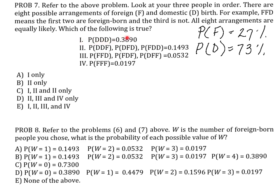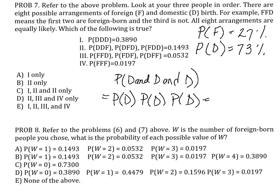And so for this one, what would we do? These are all domestic-born, so we would have to compute the probability of D and D and D, which is just the probability of D times the probability of D times the probability of D. So that's going to be 0.73 to the power of 3, which is 0.3890. So statement I is true.